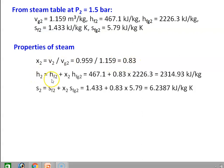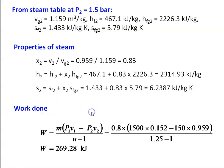Enthalpy H2 equal to HF2 plus X2 into HFG2 equals 467.1 plus 0.83 into 2226.3 equal to 2314.93 kilojoules per kilogram. Entropy S2 equal to SF2 plus X2 into SFG2 equals 1.433 plus 0.83 into 5.79 equal to 6.2387 kilojoules per kilogram Kelvin. Work done for polytropic process: W equal to M into P1V1 minus P2V2 divided by N minus 1, substituting: 0.8 into 1500 into 0.152 minus 150 into 0.959 divided by 0.25 equal to 269.28 kilojoules.